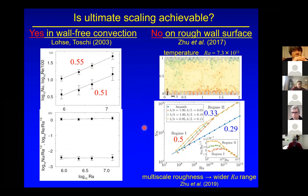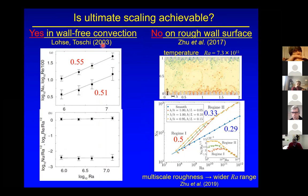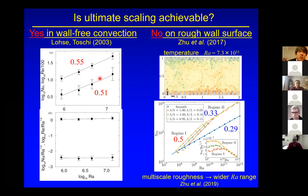So the question arises: is ultimate scaling achievable by changing the boundary condition? The answer is partially yes, in wall-free convection — something we call homogeneous turbulent convection driven by a vertical constant temperature gradient. But to be honest, it is almost trivial, because we are free from the wall and therefore free from thermal conduction, so we can observe ultimate scaling in this type of flow.